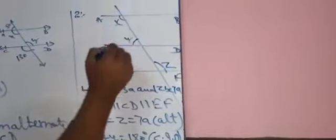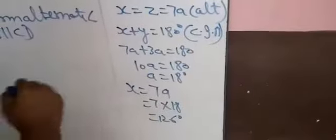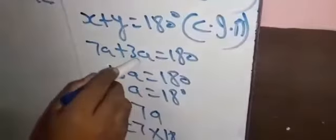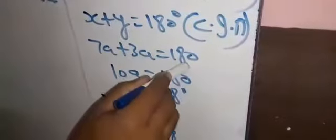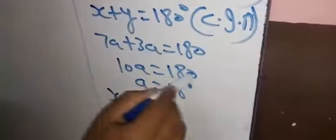Now looking at X and Y, a U-shape is formed since the lines are parallel. So X plus Y is equal to 180 degrees by consecutive interior angles. With X equal to 7A and Y equal to 3A: 7A plus 3A equals 180, so 10A equals 180, giving A equals 18. Therefore X equals 7 times 18, which is 126 degrees.